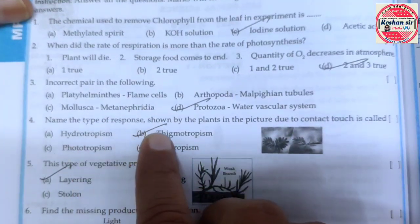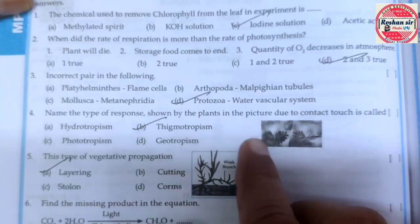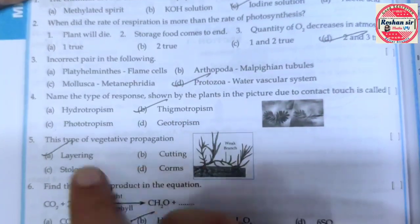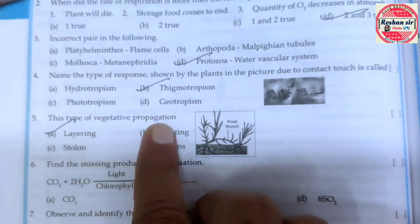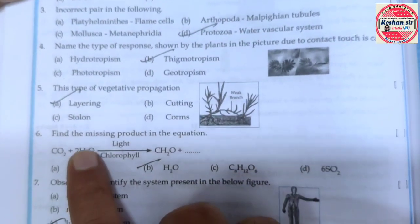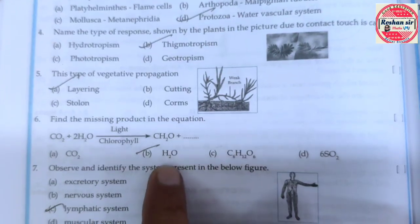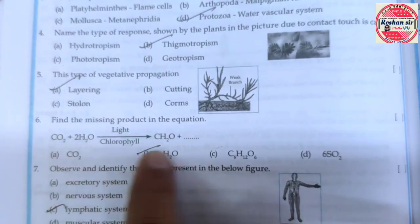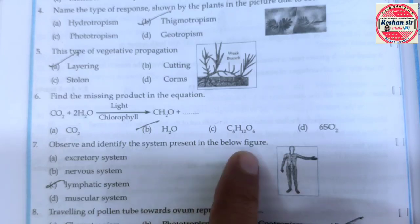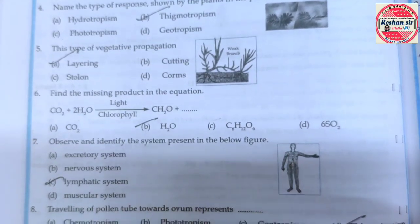Name the type of response shown by plants in the picture due to contact — thermotropism. This type of vegetative propagation — layering. Find the missing product of the equation — H2O. Observe and identify the system present in the below figure — lymphatic system.